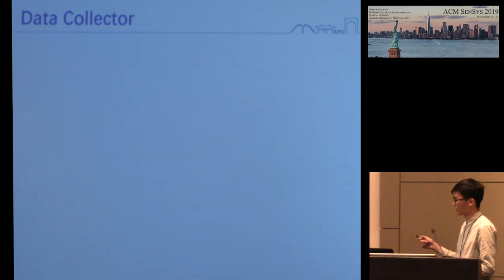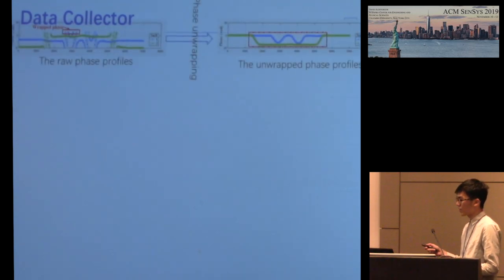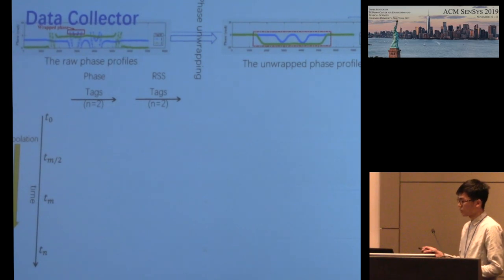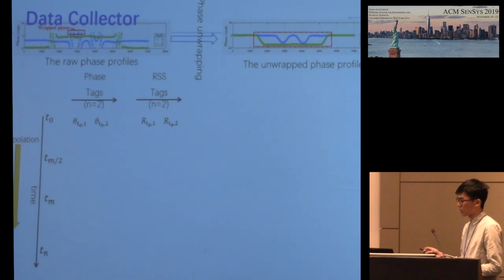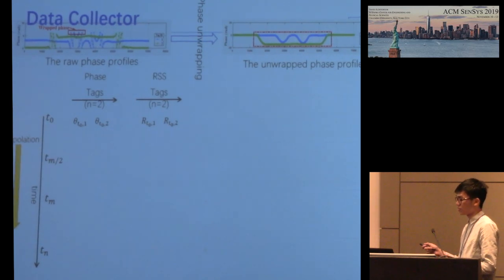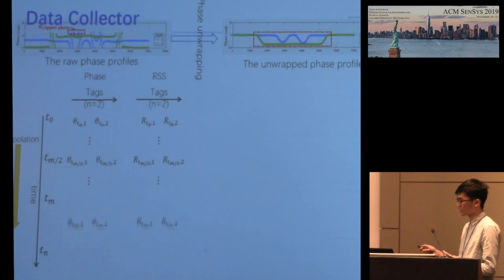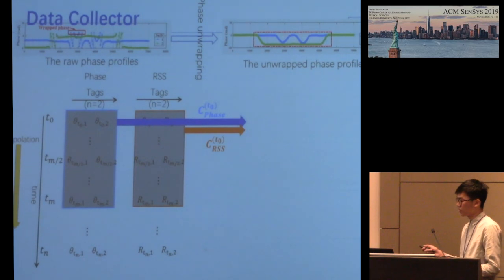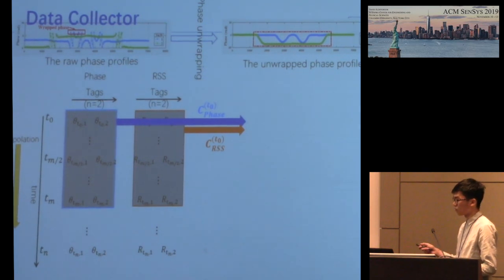First, the data preprocessing module. Phase unwrapping is performed on the raw phase strings, then interpolation is applied to obtain phase and RSS RFID signal strings with uniform sampling frequency. Suppose that the reader queries tags at a constant rate. At any sampling point, we can obtain N phase values and N RSS values, forming two N-dimensional vectors. Then we split these two vectors along time to generate Q sliding windows whose length is N with 50% overlap. Then we convert all windows into N times N matrices.